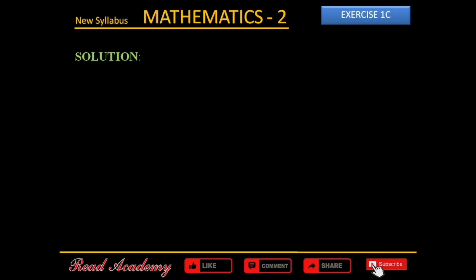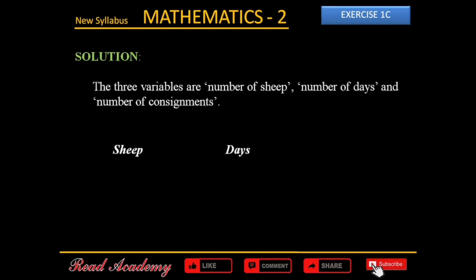This question is pretty similar to the previous question. We can solve this in two steps. The three variables in this question are number of sheep, number of days, and number of consignments. In the first step, we are going to keep the number of days constant.